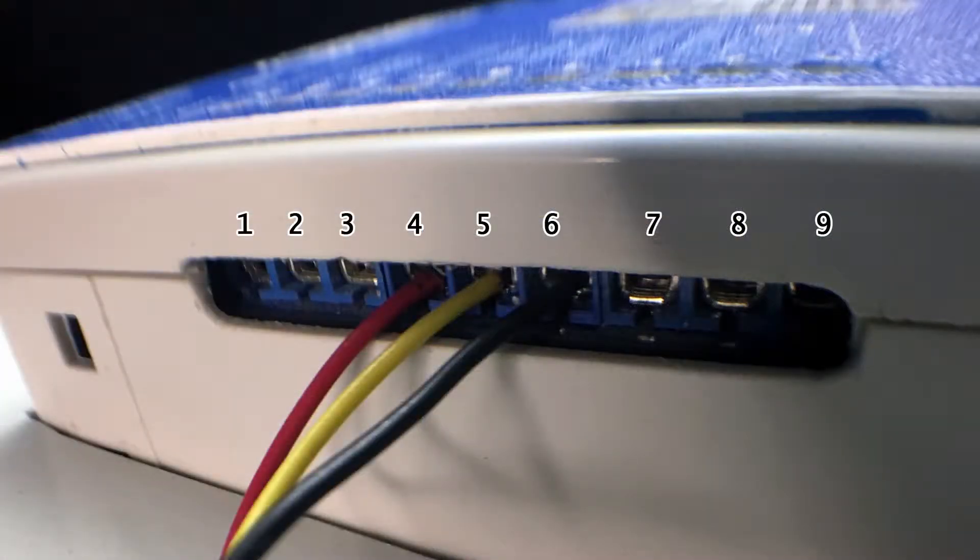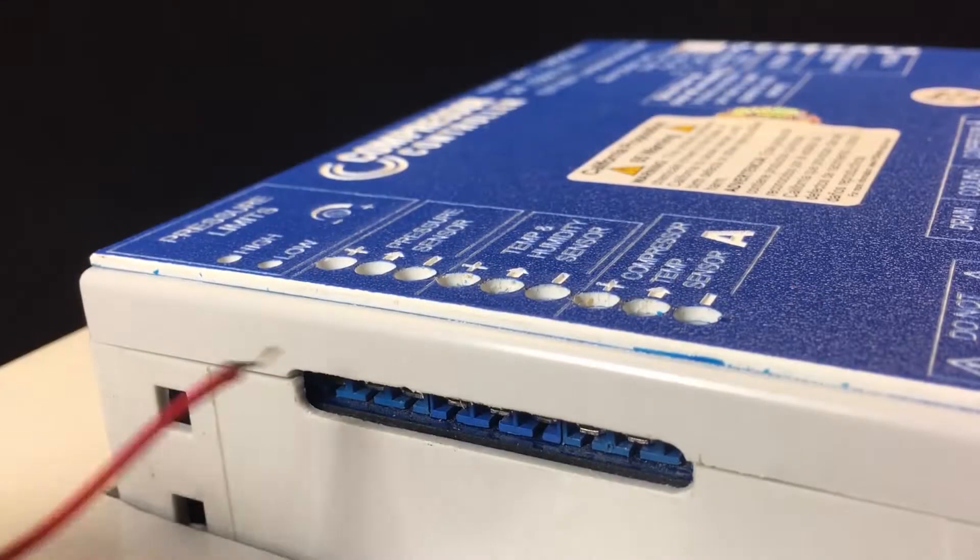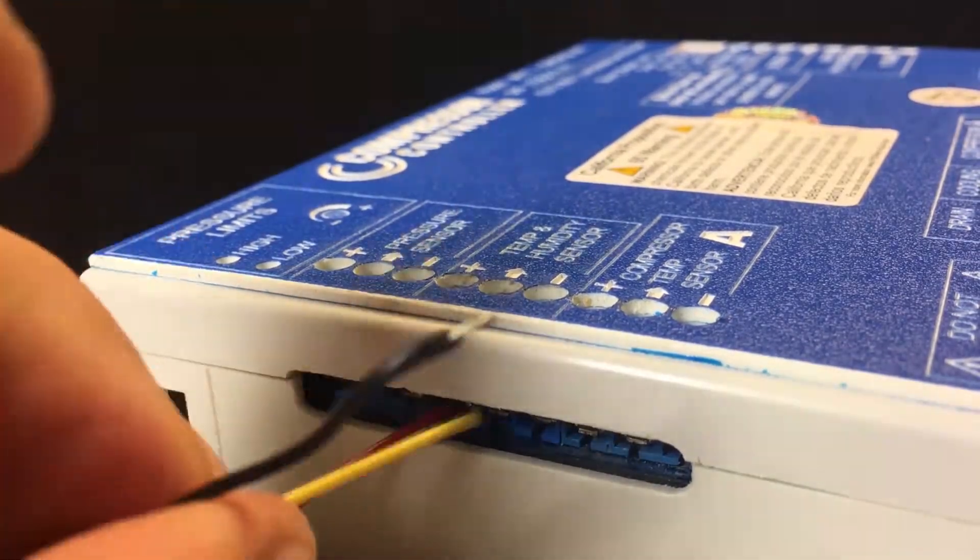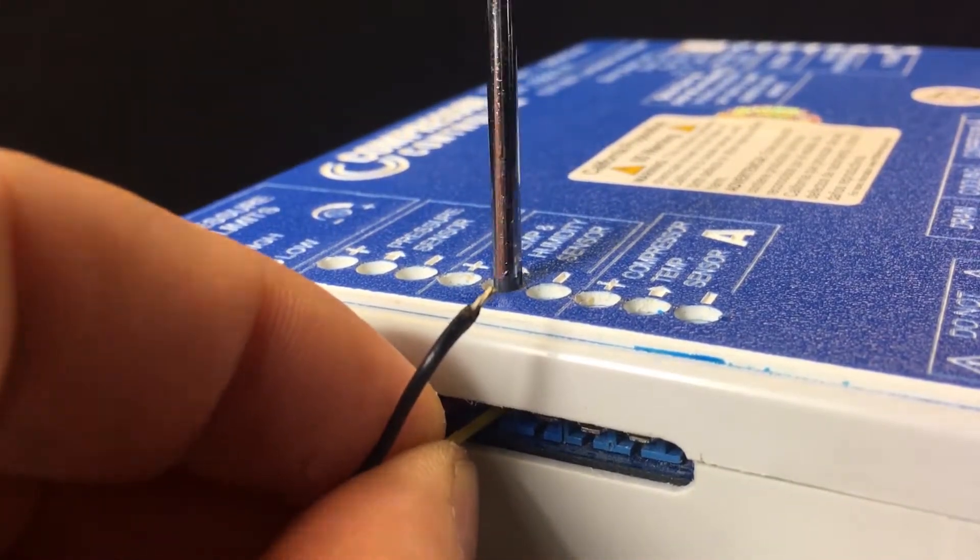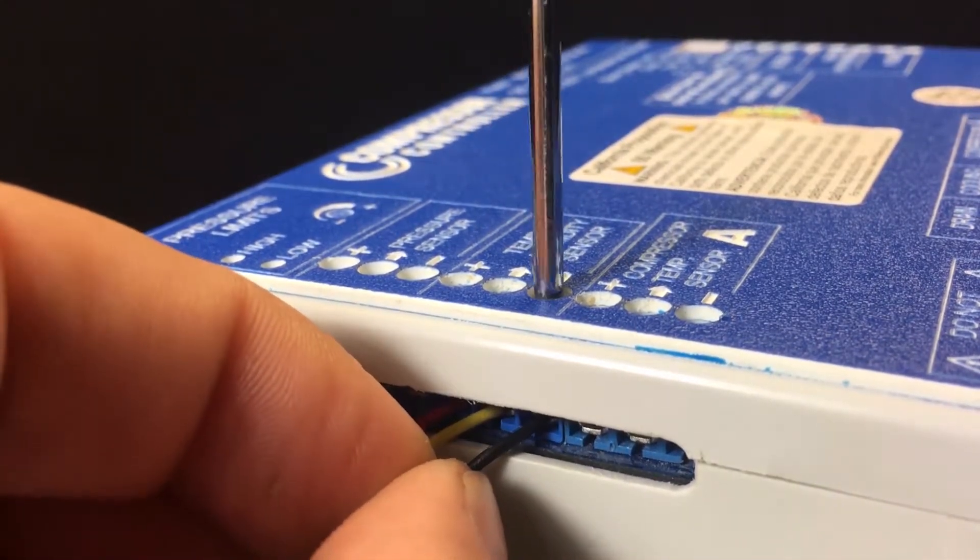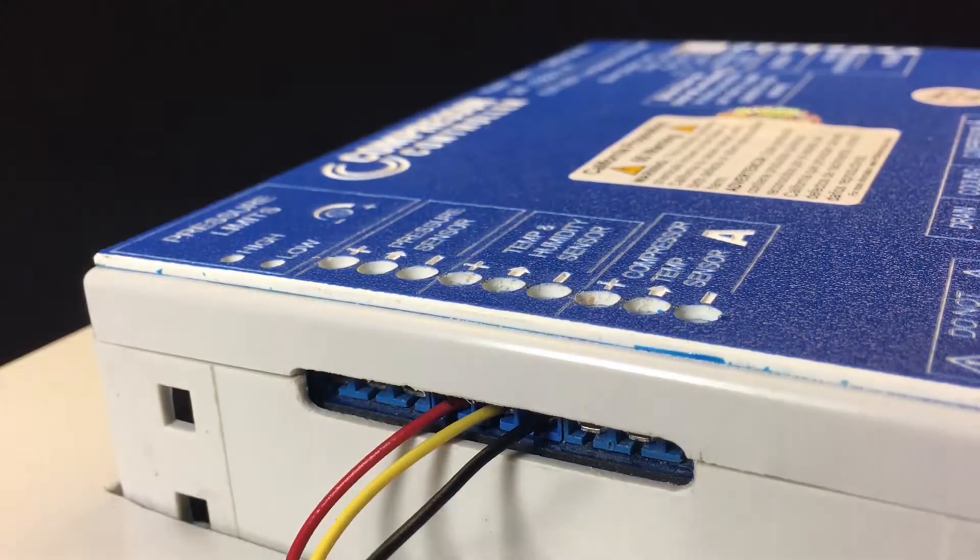When locating the correct connector, it may be helpful to count the connectors to ensure that they match the intended connector label. We are now connecting the temperature and humidity sensor. To do this, we will insert the wire and tighten the screw with a flat head screwdriver. Each connection should be checked that it's seated tightly by gently tugging on the wire once it's connected.